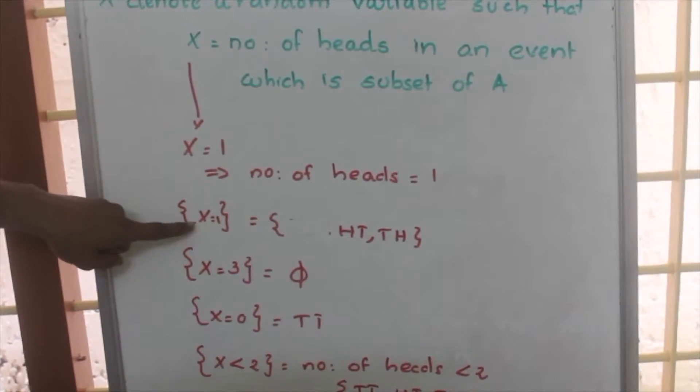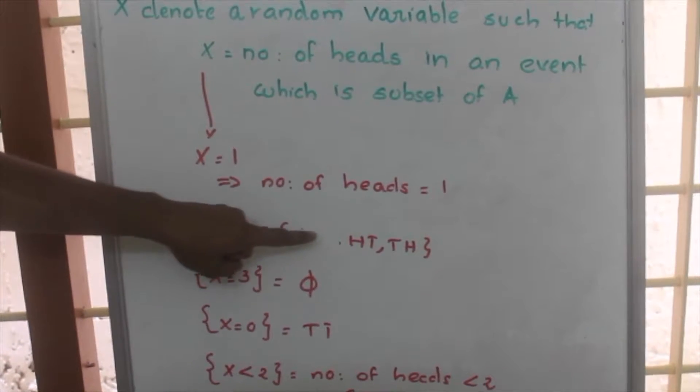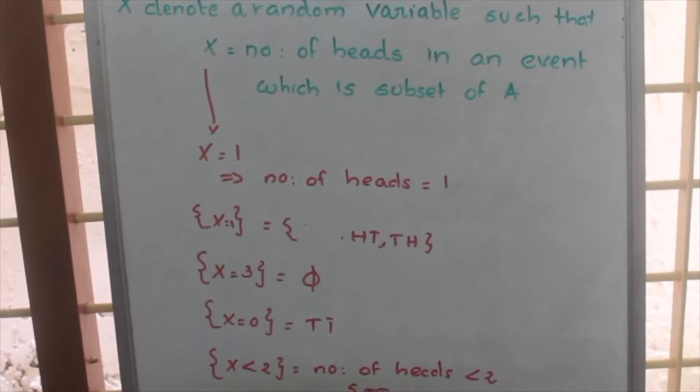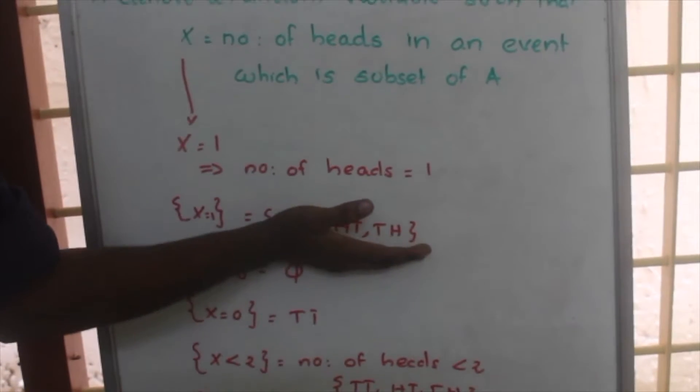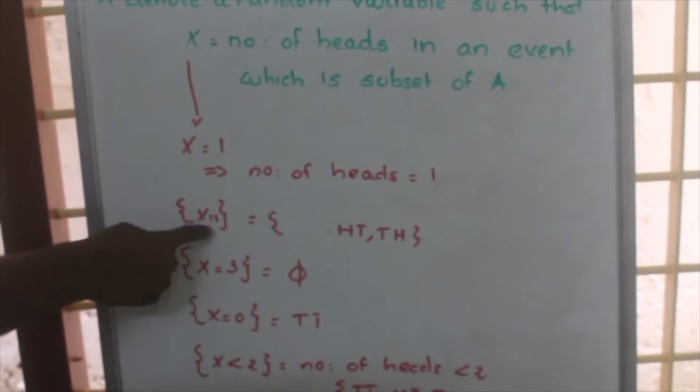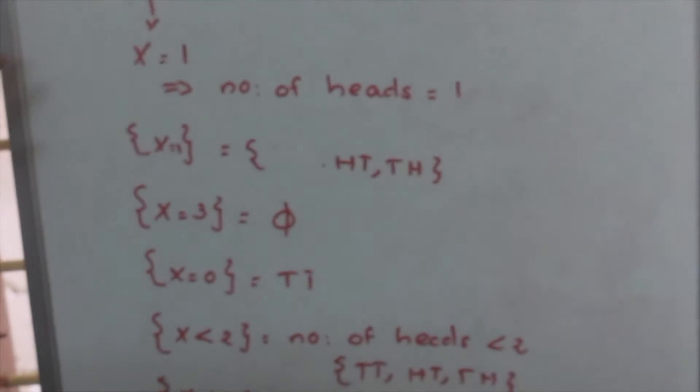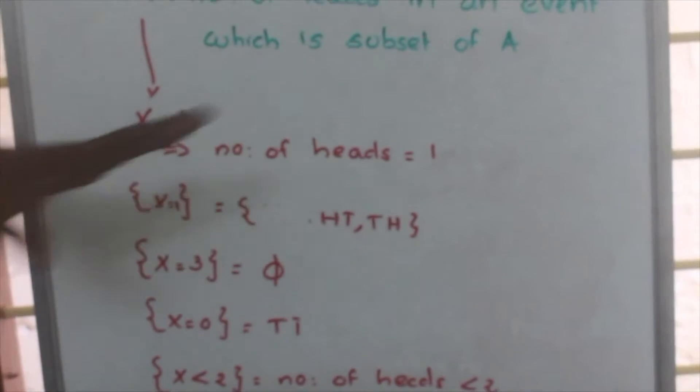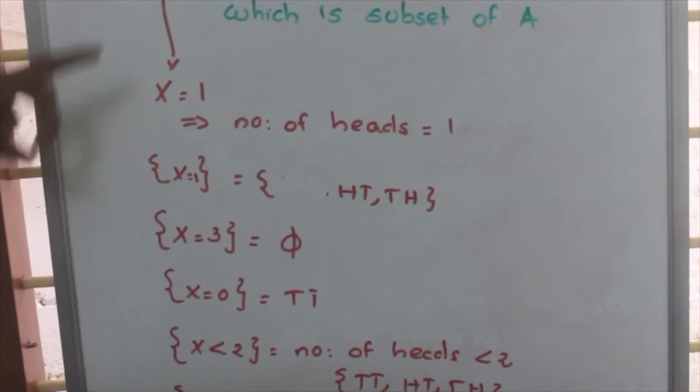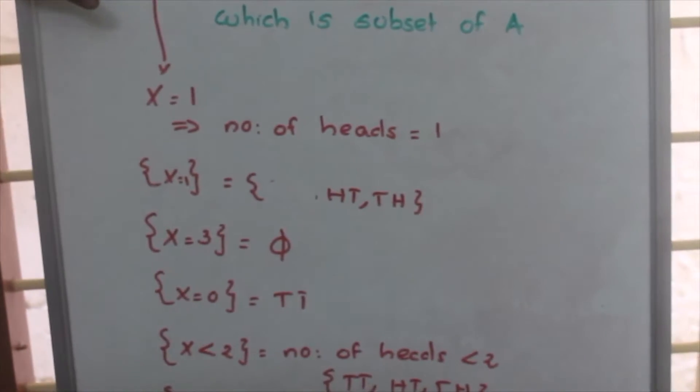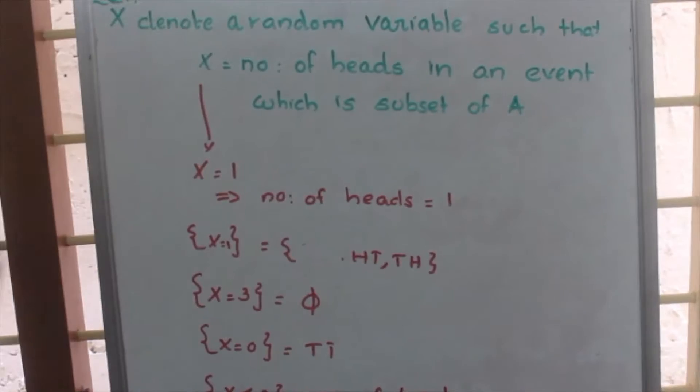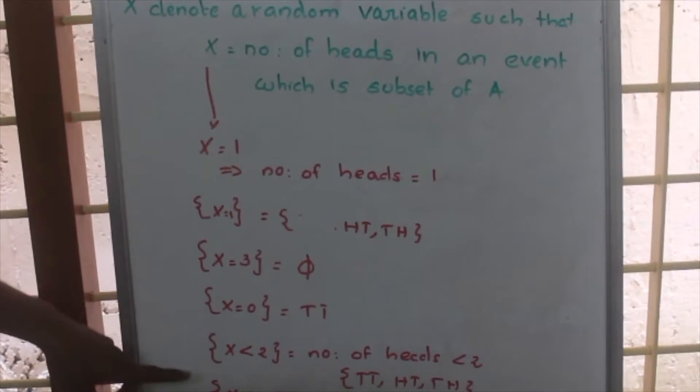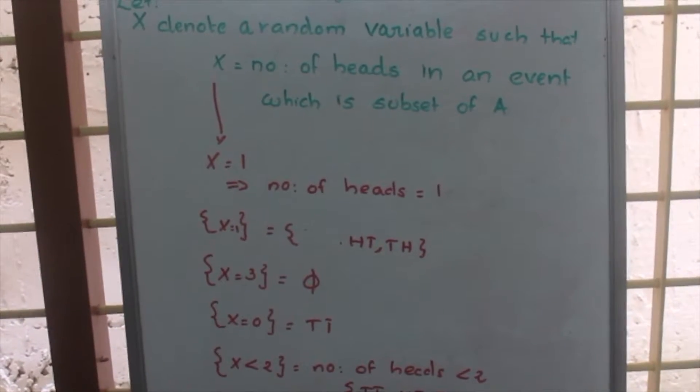In other ways, for a random variable X is equal to 1, this set is HT, TH or this set can be denoted by a variable X is equal to 1. Similarly, if X equal to 2 means number of heads in an event is equal to 2. We have only one outcome, that is HH which have two heads. So for X is equal to 2, we will have HH.